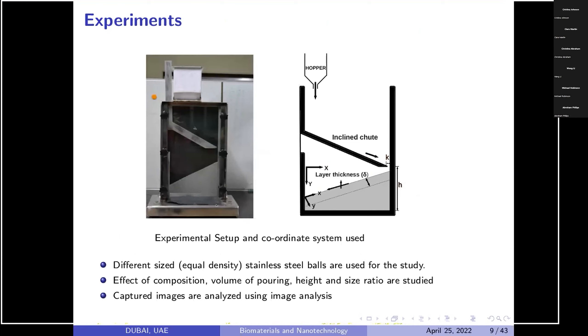We did a lot of experiments and that experiment talks about different size, density, then composition, volume of pouring, height, size ratio, and then we capture image. I'll just explain one of the experiments. I hope this screen is visible. If you take a mixture of particles and I add a mixture of particles of large or small, they combine together and then they drop down and then they form a heap.